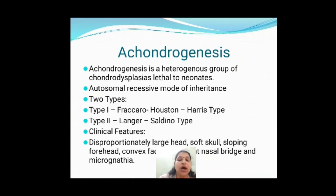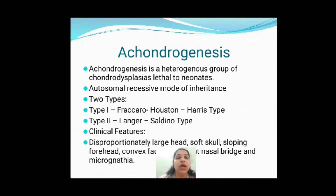There is one more condition called achondrogenesis. You just need to know that it is a heterogeneous group of chondrodysplasias — something is going to be wrong with the cartilage — and there are two types: type 1 and type 2.